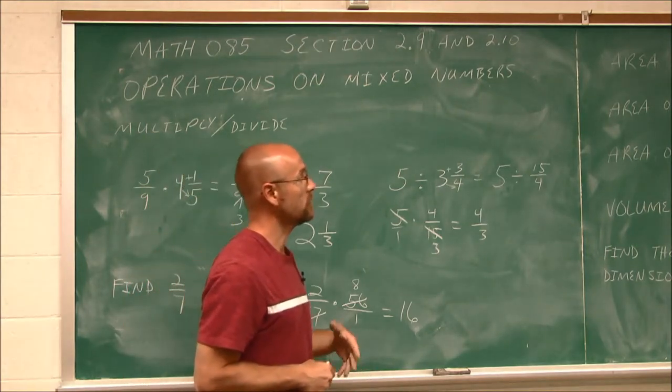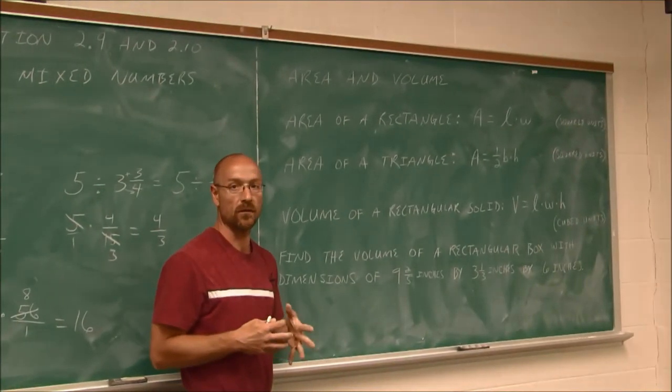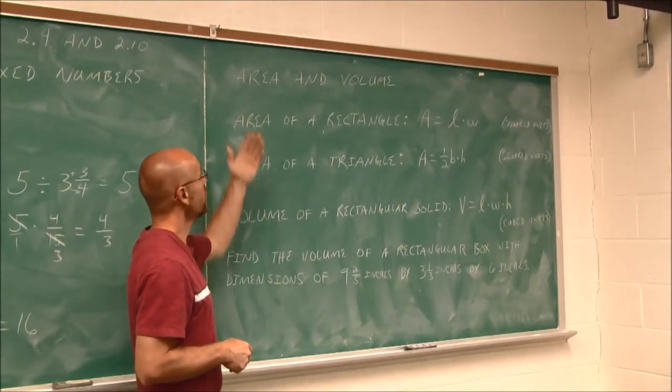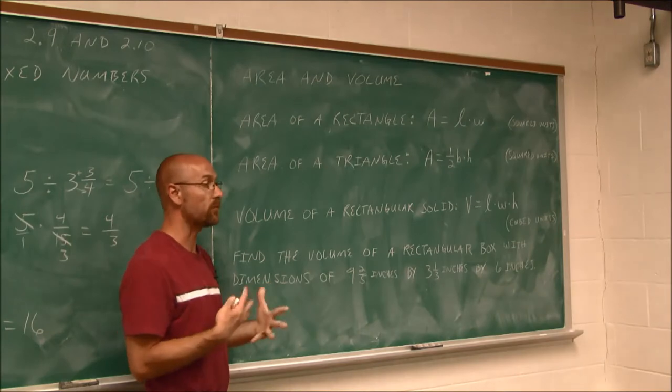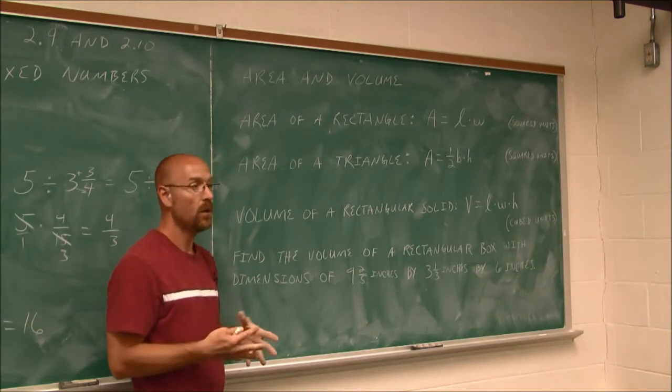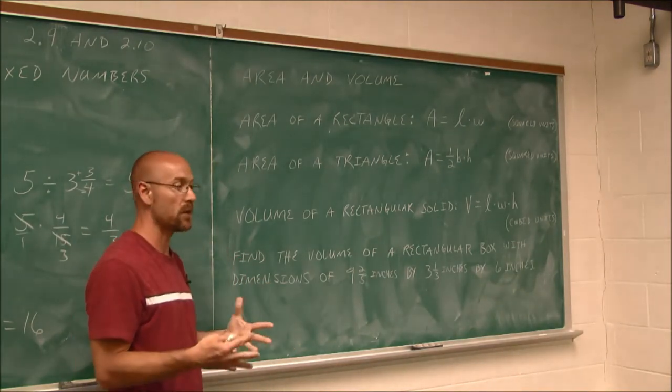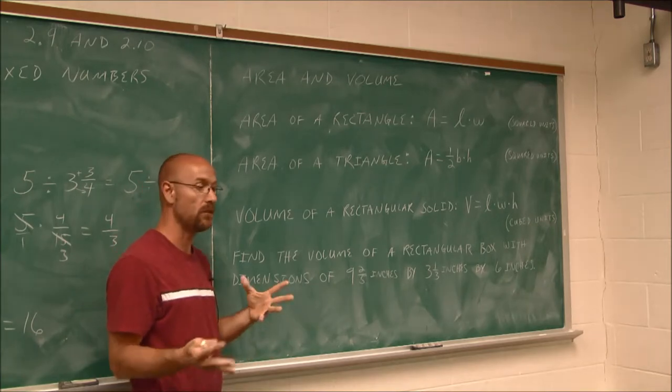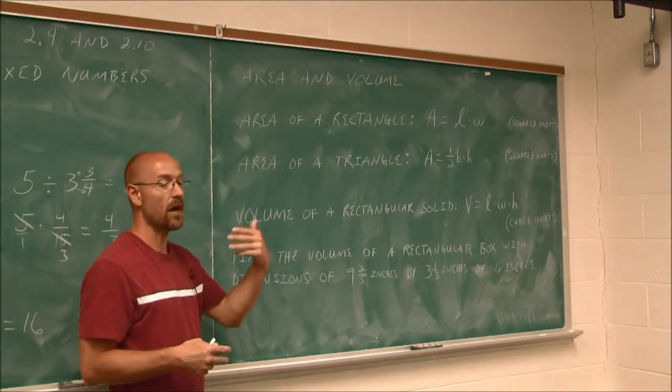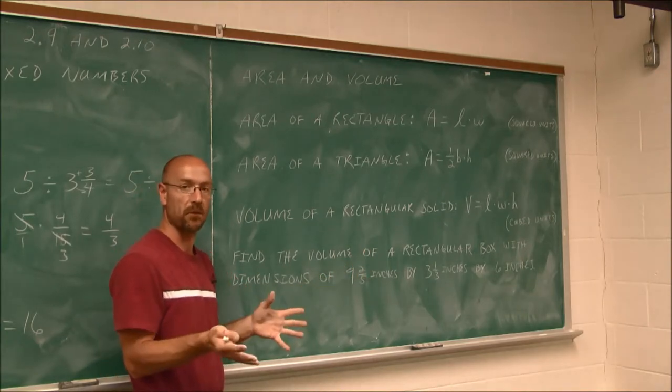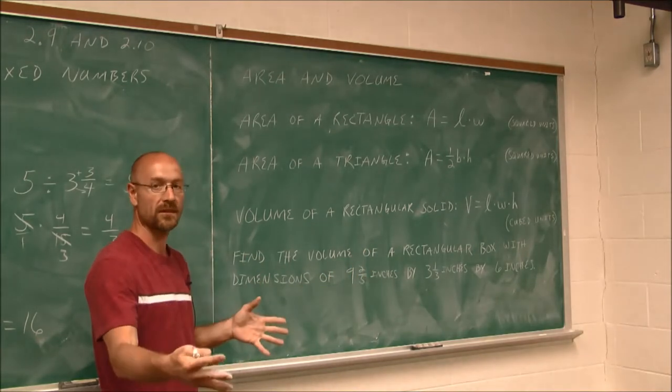All right, let's look at where we might see some applications of multiplying mixed numbers. And where we might see them is area and volume. Because when it comes to finding an area or a volume, we take measurements. And when we take measurements, whether it be miles, or feet, or meters, sometimes we write them as mixed numbers. Maybe I drive 2 and 1/2 miles and then take a right, and I go another 6 and 1/2 miles.